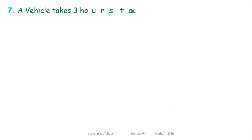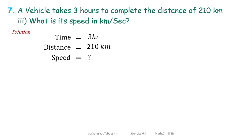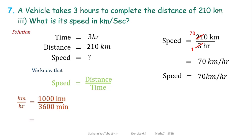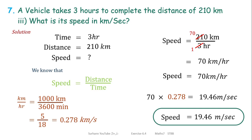In the same way, try to solve the remaining problems by yourself — they are very simple. In this problem we have to find speed. Using the speed and distance formula, we get 70 kilometer per hour. But we have to convert this into kilometer per second. First find 1 kilometer per hour, which equals 0.278 meter per second. Multiplying 0.278 by 70, we get 19.8 meter per second.